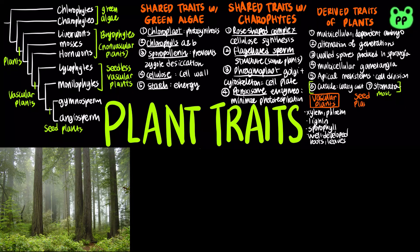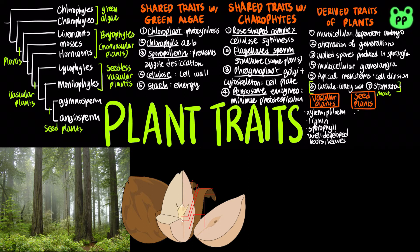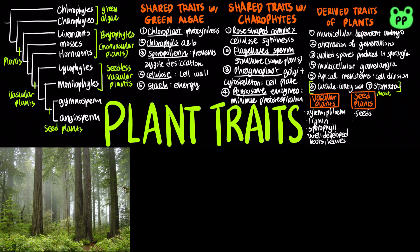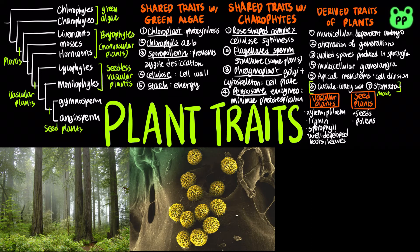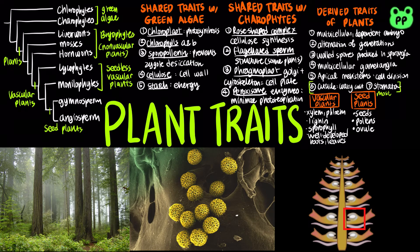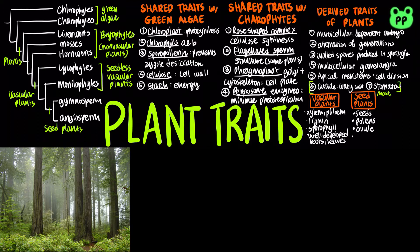Derived traits of seed plants include seed, which is an embryo and nutrients surrounded by a protective coat. It provides some evolutionary advantages over spores, including the ability to remain dormant for years, and the ability to be transported long distances by wind or animals. Second, pollen, which are male gametophytes that can produce a pollen tube that transfers the sperm to the ovule, which is the female reproductive organ that consists of megasporangium, megaspores, and one or more protective integuments. And heterospory, which is the production of spores of two different sizes and sexes by the sporophytes of land plants.